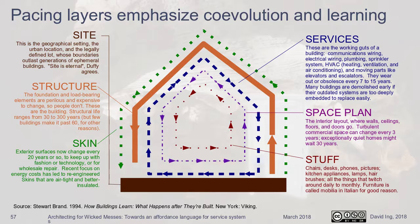You put in the services, then the space plan, which is the non-load-bearing walls. After that, you put in the stuff — all the furniture. The idea is that when you are looking at systems, you look at them in terms of a certain time and the layer you're looking at.